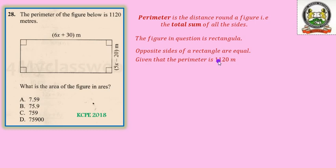Now given that the perimeter is 1120 meters, we can form an algebraic equation that will help us to get the value of x. To get the value of x, and once we get the value of x, it will help us to get the actual length and the actual width. Now since we know the perimeter is 1120, then perimeter will therefore be twice the length plus twice the width.